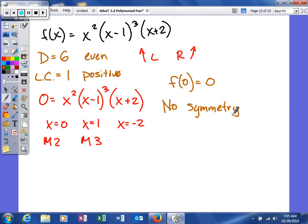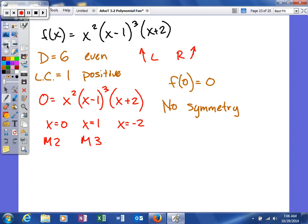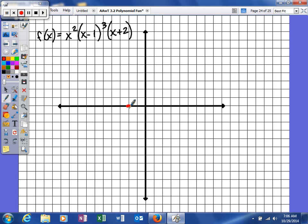So let's see if we can go over to the next screen and graph it. So now we're going to try to graph our polynomial. Here's our x-axis. Here's our polynomial. First thing we're going to do is put the zeros: 0, 1, and negative 2. Negative 2, 0, and 1.